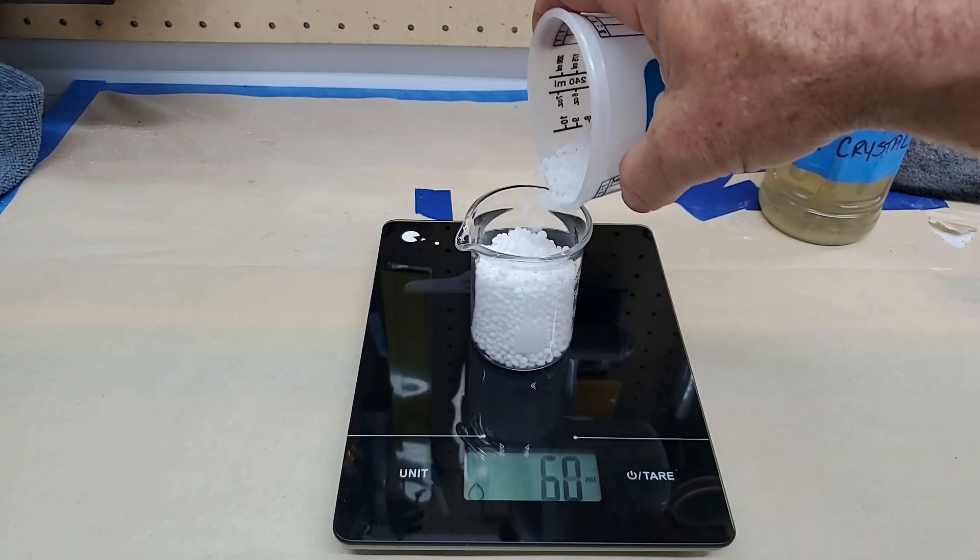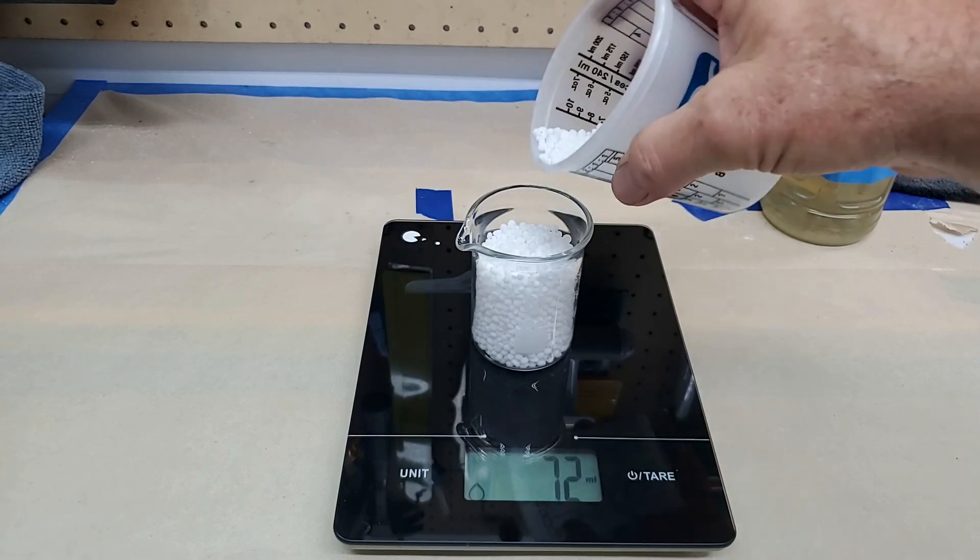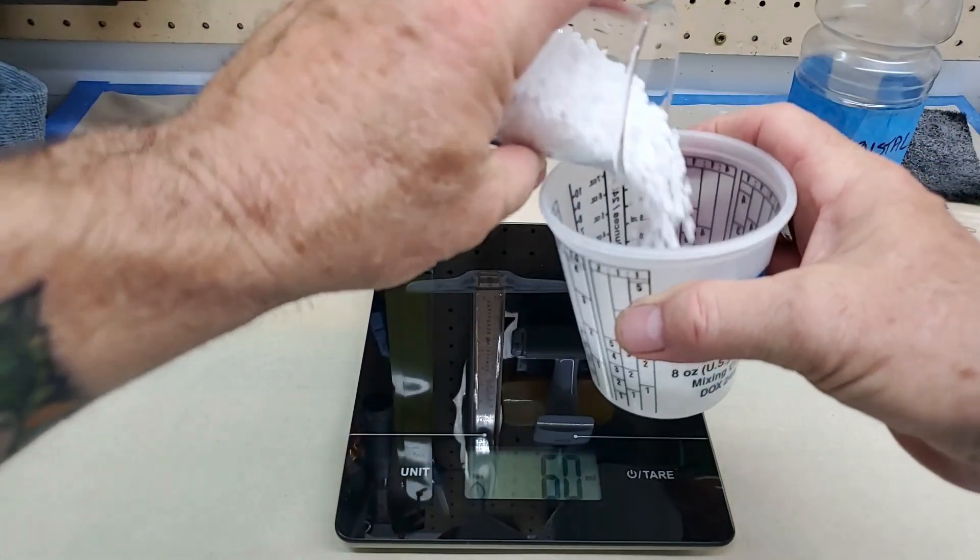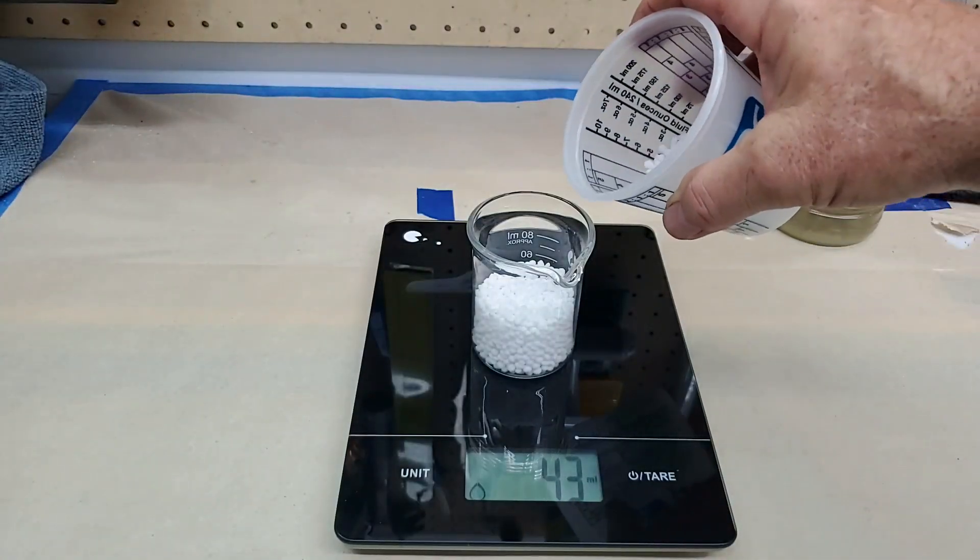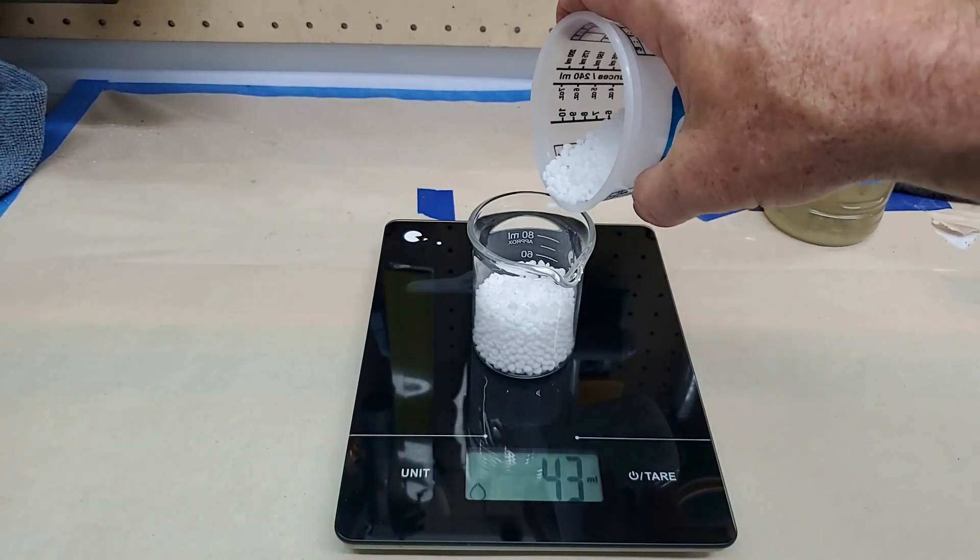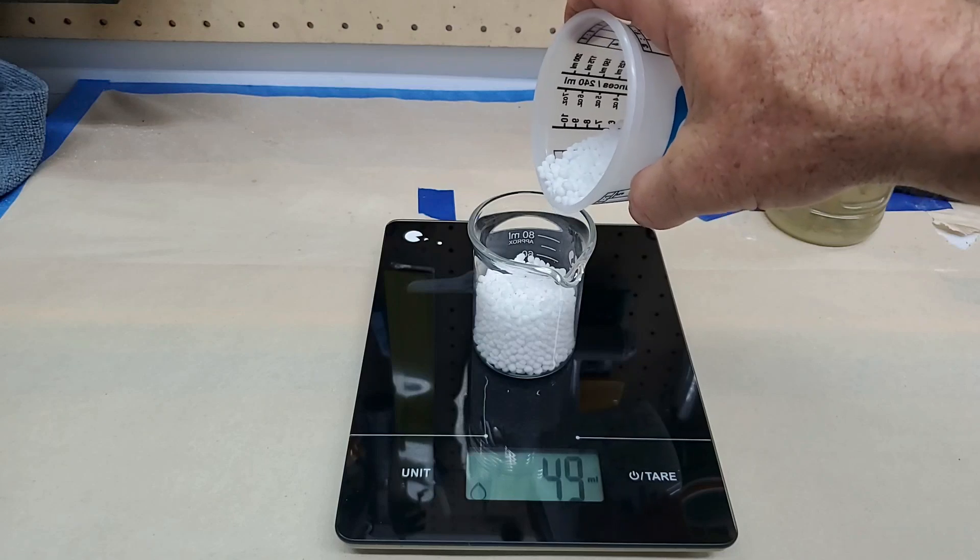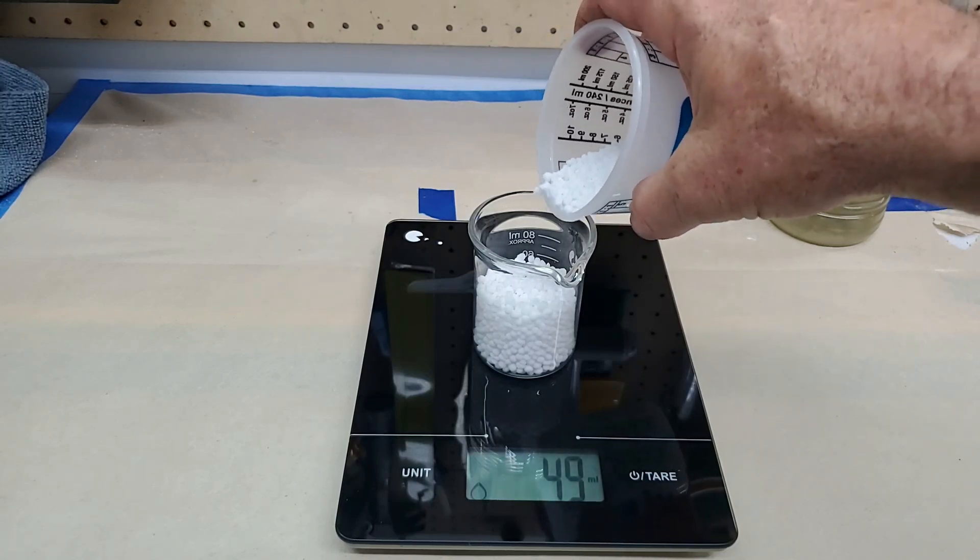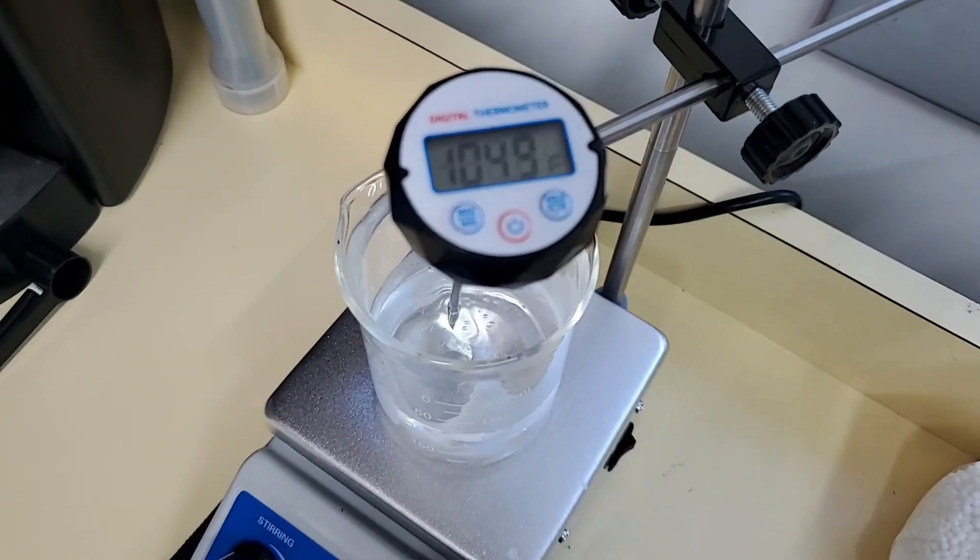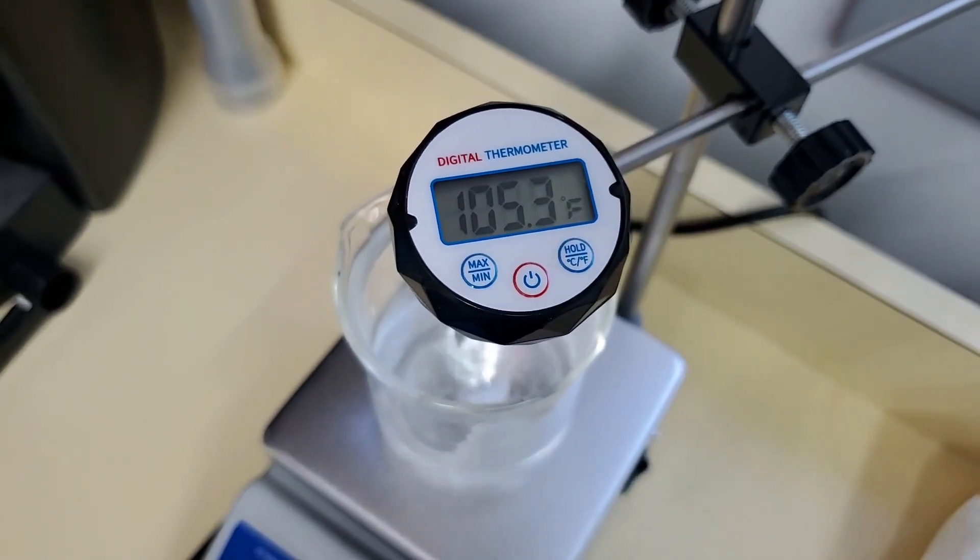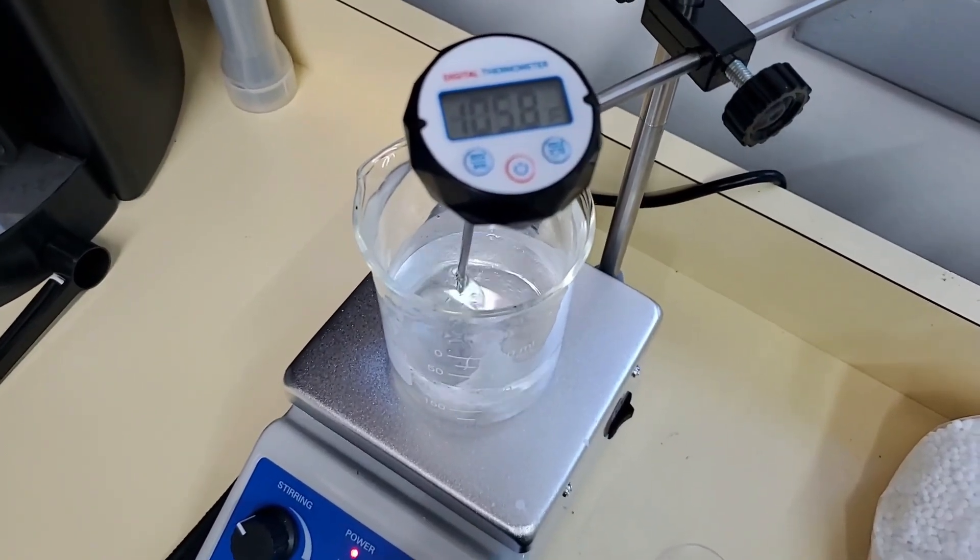So I like to add the urea half at a time because it cools down the water. There's 50 and 50. Our water is up to 105 degrees now. So a little bit more and we'll be ready to add the first half of the urea.